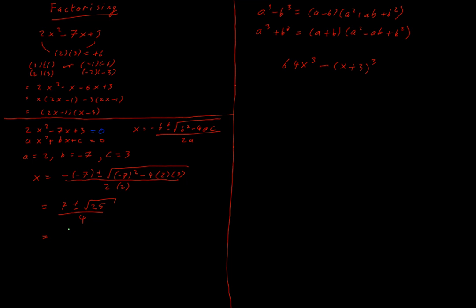Tidying that slightly, the square root of 25 is 5, so I end up with 7 plus or minus 5 all over 4. Two valid answers because of plus and minus - I know I usually get two roots from a quadratic equation.